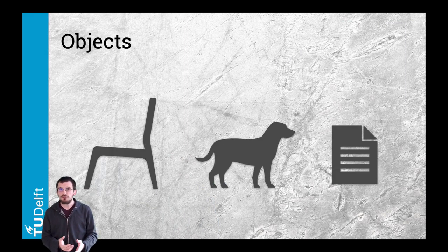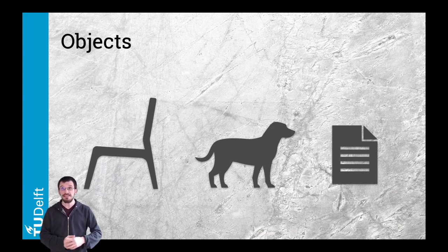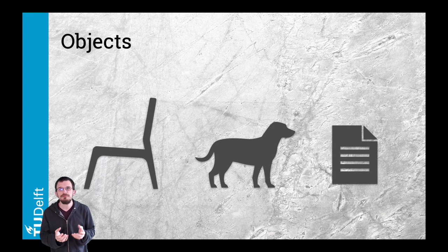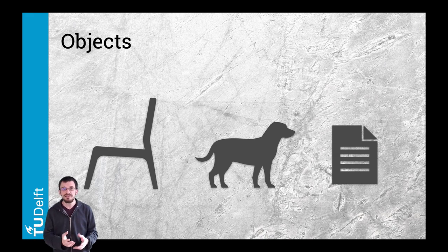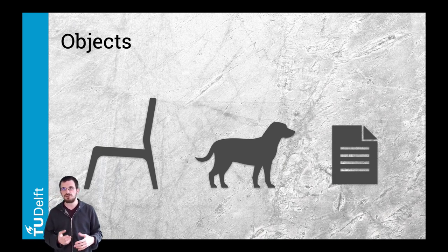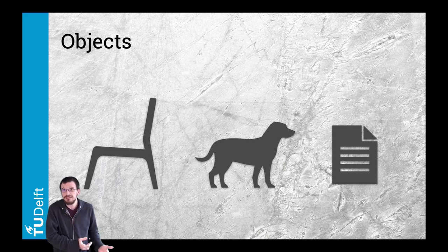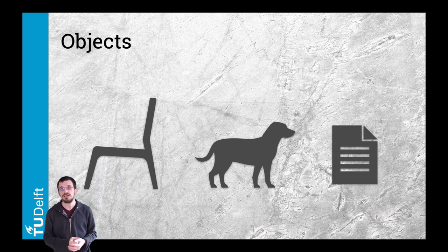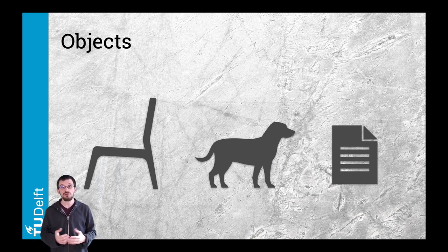Beyond the implementation language, software can be structured around a common mental model: objects. Object-oriented design is about structuring software with a mental model in which everything can be represented as an object. Objects are representations of things that matter for the software. It can represent a physical object such as a chair, a building, but also a living entity such as a human or a pet. It can also be a virtual or intangible element such as a bank account or a file on a computer — anything that is relevant to the software being designed.